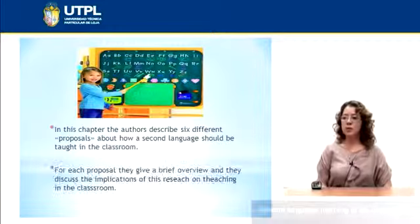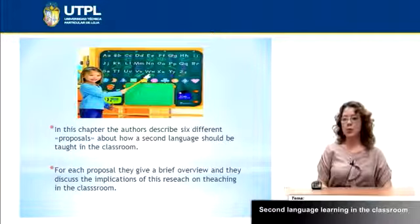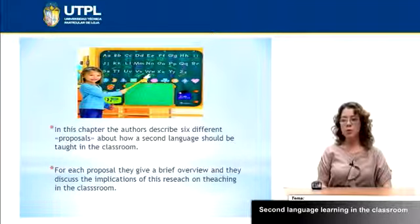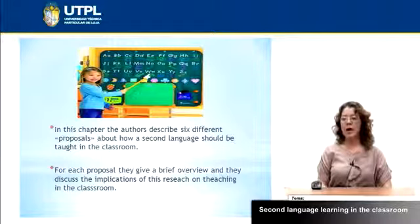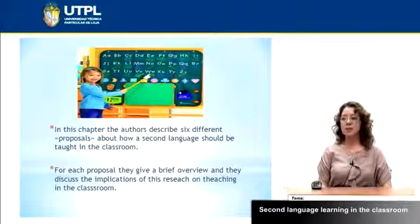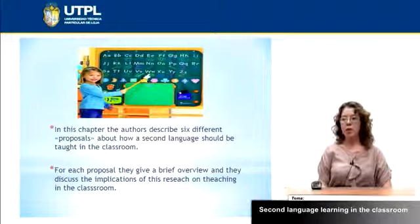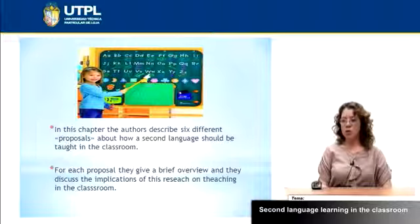In this chapter the author describes six different proposals about how a second language should be taught in the classroom. For each proposal, you can find examples, researchers, and how this research can be applied in our classrooms. For each proposal they give a brief overview and discuss the implications of this research on teaching in the classroom.